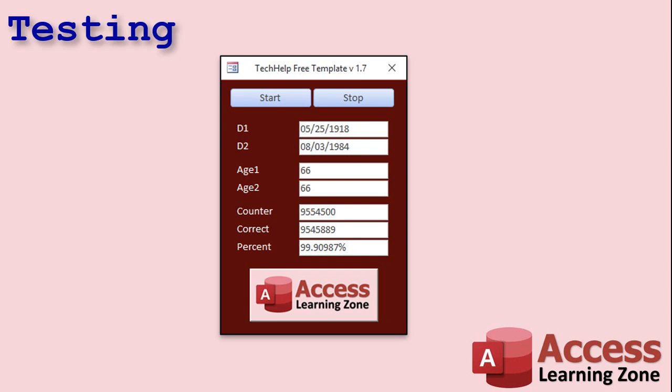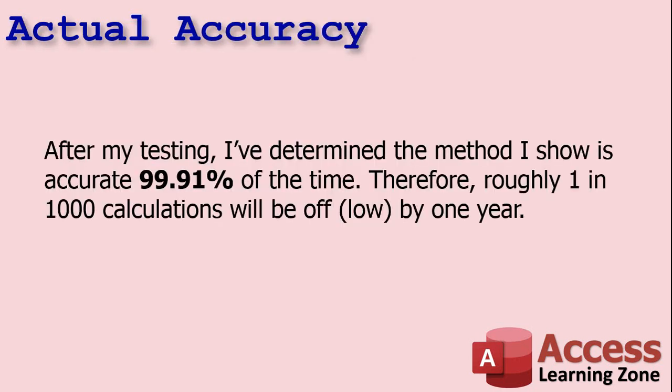After running through almost 10 million iterations, it turns out that the age simple division calculation is 99.91% accurate — that's after almost 10 million calculations. So 99.91% of the time it's accurate. Therefore, roughly one in a thousand calculations will be off by one year, and they'll always come in low.